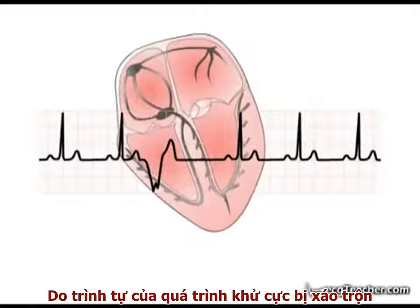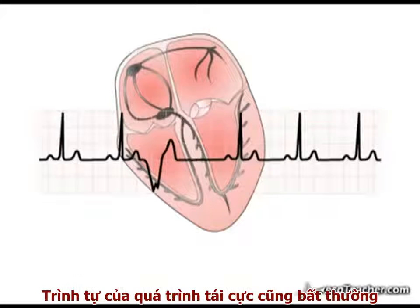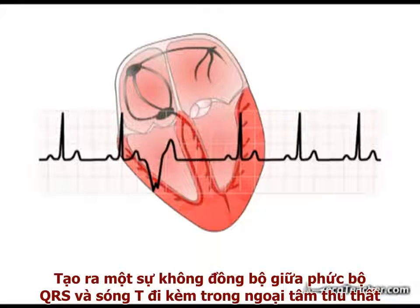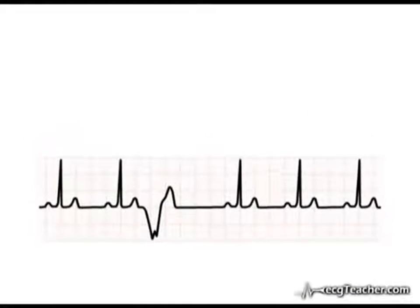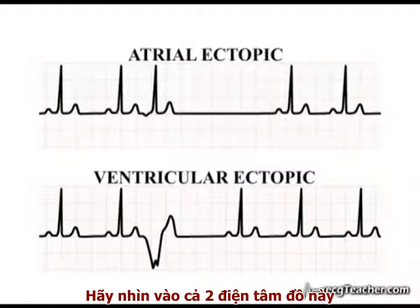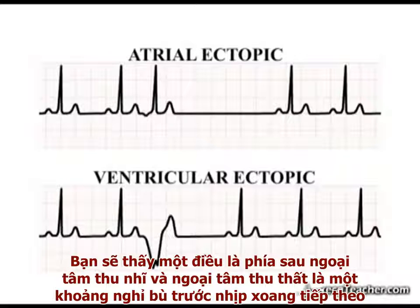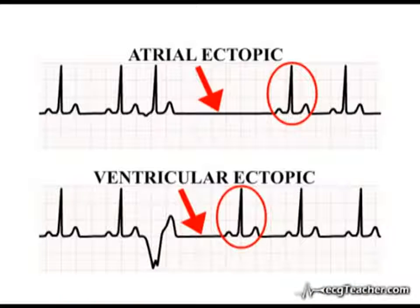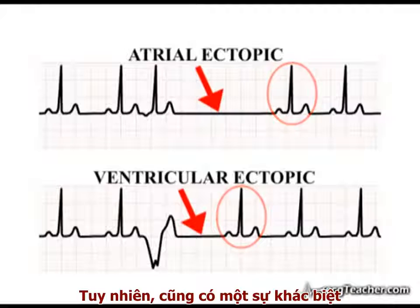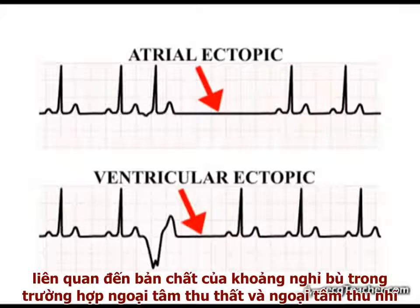As the sequence of depolarisation is deranged, the pattern of repolarisation is also abnormal, manifesting as a lack of concordance between the ectopic QRS complex and the associated T wave. Looking at both of these rhythm strips, you will notice that the atrial and ventricular ectopic are followed by a pause before the next sinus discharge. There are, however, important differences between the nature of this pause in the case of atrial and ventricular ectopics.